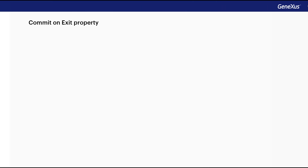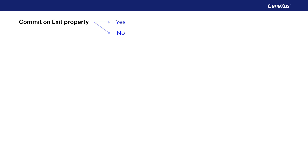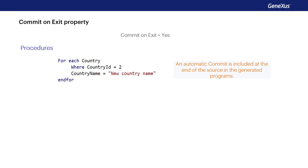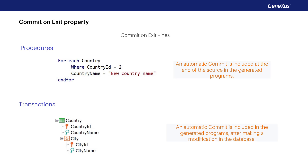The GeneXus objects of transaction and procedure type offer the property 'Commit on Exit' that can take the value yes or no. This decides whether the generated programs will execute an automatic commit. By default, GeneXus includes a commit statement in the generated programs associated with objects of transaction and procedure type. In procedures, an automatic commit is included at the end of the source. In transactions, an automatic commit is included after a modification is made in the database — that is, after inserting, modifying, or deleting data — and immediately before executing the code associated with the rules conditioned to the After Complete triggering moment.